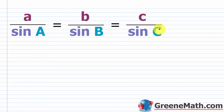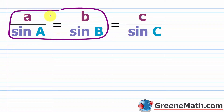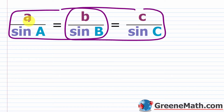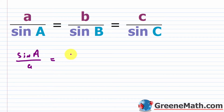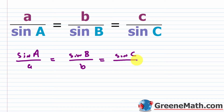We write this in compact form. You're only going to use two of these at once — you might set any two ratios equal to each other, depending on what you need. Alternatively, you could write it as sine of A over a equals sine of B over b, which equals sine of C over c.